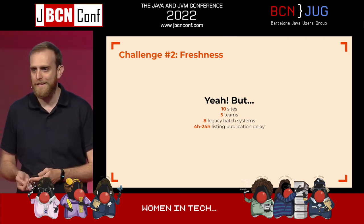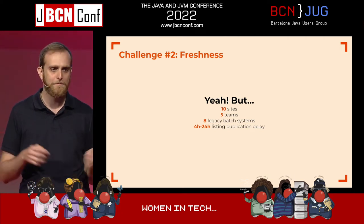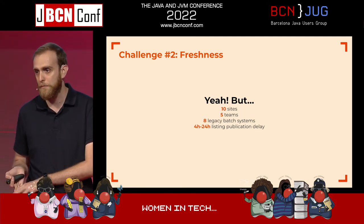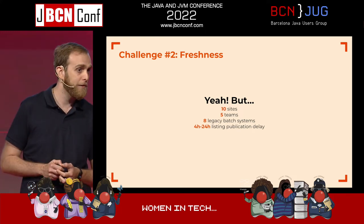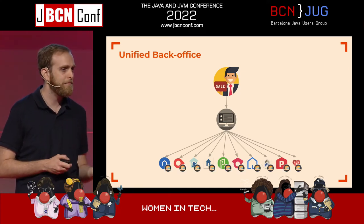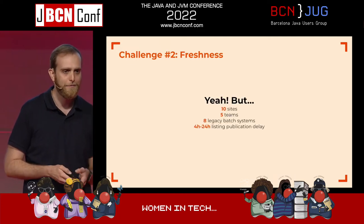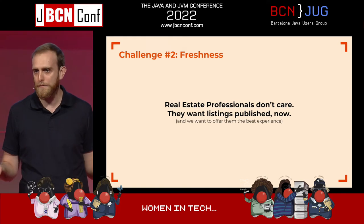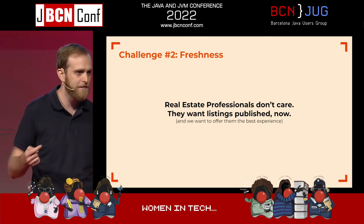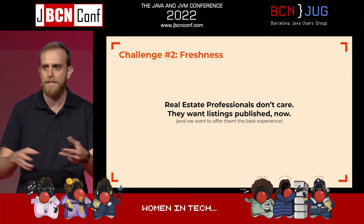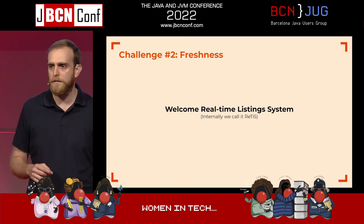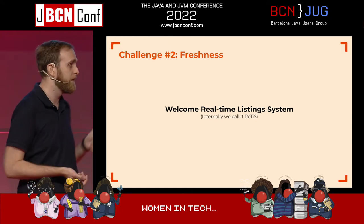That sounds nice, but since I told you it's a big bunch of companies working together, there's lots of lines of code, lots of sites, lots of teams. And yes — legacy code, legacy systems. These systems take between four and 24 hours, if you're optimistic. A real estate professional cannot accept that — they want to publish a property and check it immediately. That's why we created this real-time listing system, which internally we call Retis.